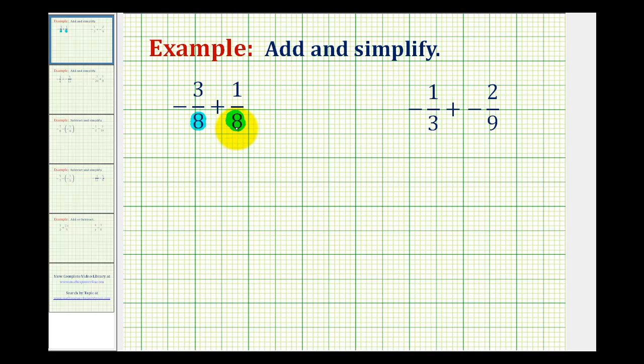But I think when adding fractions that involve negative fractions, it's helpful if we rewrite this negative fraction so the negative sign is in the numerator. So we're going to rewrite this as negative three over eight plus one over eight. Now negative three eighths written in this form and this form are equivalent, but I think when adding negative fractions, this form is a little bit easier to work with.